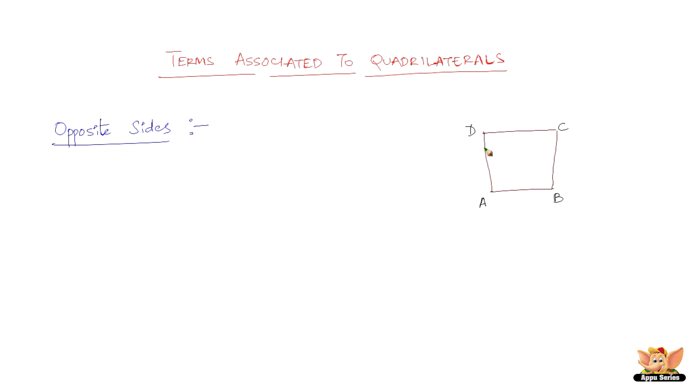Now say for example AB and AD, they share this vertex here. So these two sides cannot be opposite sides. So what can be opposite sides? AB and BC? No, they can't because they share again a vertex here.